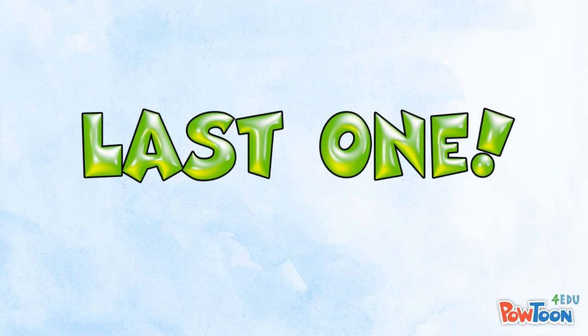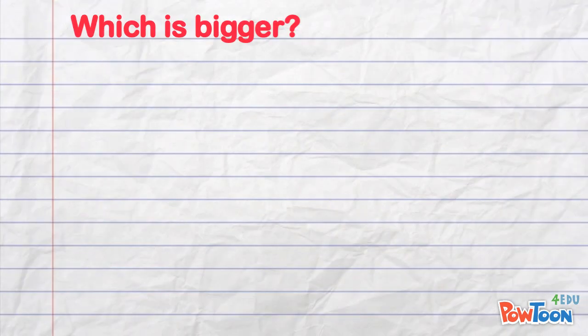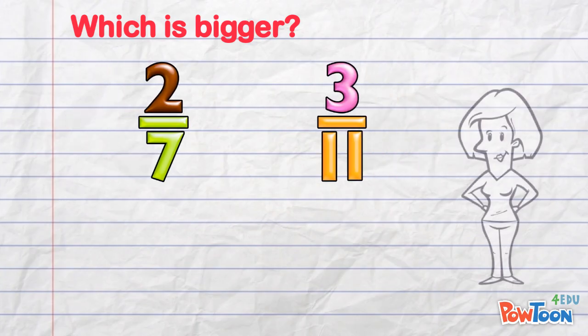Last one, then it's over to you. Which is bigger? 2 sevenths or 3 elevenths? The denominator would be 77.